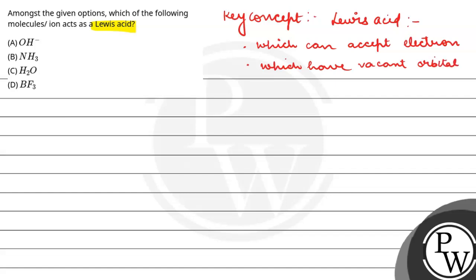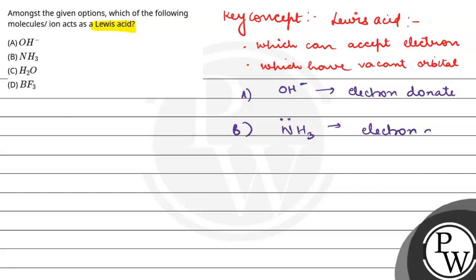If we look at Lewis base, Lewis base is a substance that donates electrons. OH negative will not act as a Lewis acid. Similarly, ammonia has a lone pair and will donate electrons. Water also has a lone pair on oxygen, so it will also donate electrons. These are all Lewis bases.